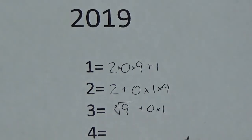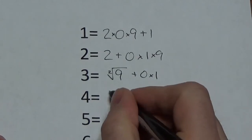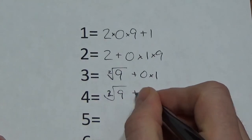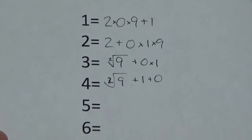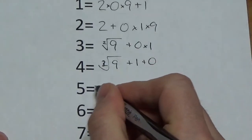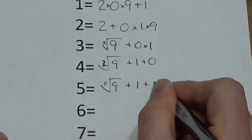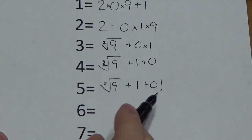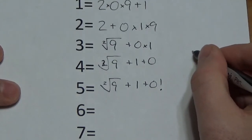And you've got to use all four digits here. For 4, I want to do the square root of 9 plus 1 plus 0. So 3 plus 1, there's your 4. Now to get 5, I'm going to do the square root of 9 plus 1 plus 0 factorial. Remember, by definition, 0 factorial is going to be 1. For those that maybe aren't aware of what I mean by factorial — just for an example, 3 factorial is going to equal 3 times 2 times 1.